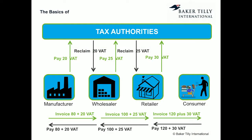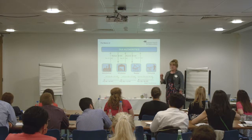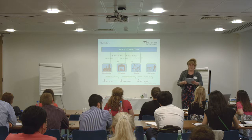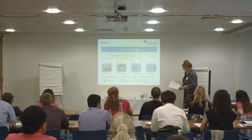In this example, the manufacturer sells goods to the wholesaler using an invoice of 80 plus 20 euros VAT. The manufacturer pays the VAT collected to the tax authorities; the wholesaler can then reclaim it. This continues through the chain. In the end, the consumer pays 120 plus 30 VAT. The retailer pays it to the authorities, but the consumer cannot reclaim it — they carry the VAT burden.